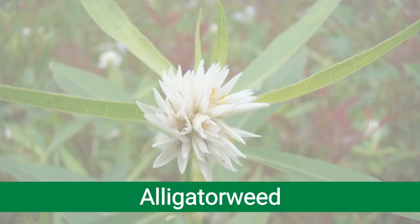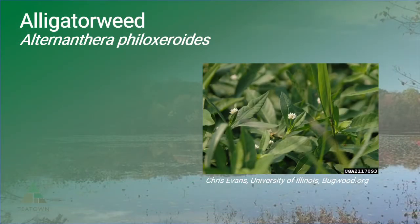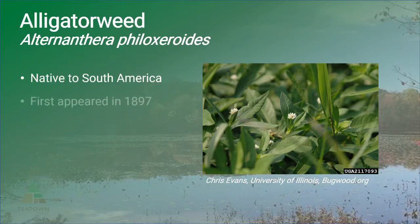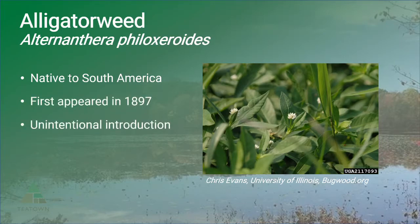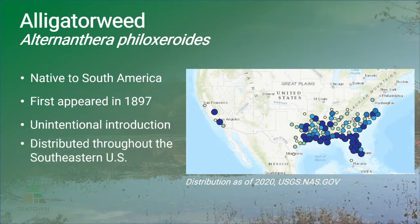Alligator weed is a perennial herbaceous plant with horizontally sprawling floating stems, allowing it to form dense masses on the surface of the water. This species can be confused with water primroses, which have a very similar growth habit. Alligator weed is native to South America and was first reported in Alabama in 1897. It is believed to have been unintentionally introduced through ballast water. This plant is listed on the federal noxious weed list and is currently found throughout the southeastern U.S., causing major problems in Florida and Texas.